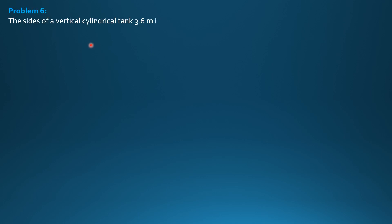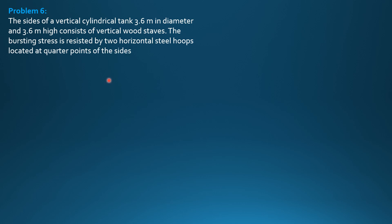The sides of a vertical cylindrical tank 3.6 meters in diameter and 3.6 meters high consist of vertical wood staves. The bursting stress is resisted by two horizontal steel hoops located at quarter points of the sides. The lower half of the tank contains water, the upper half oil of specific gravity 0.8. Compute the tension in each hoop.